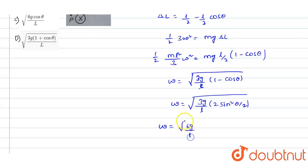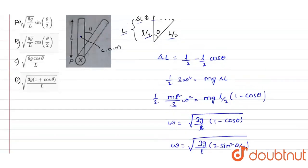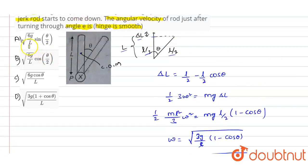So angular velocity omega value will be √(6g/L) × sin(θ/2). This is the value of angular velocity that we have got. Out of these four options, if you observe, option A: √(6g/L) × sin(θ/2). So this is the solution that we have got.